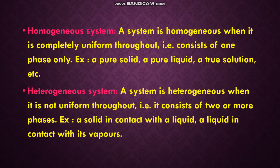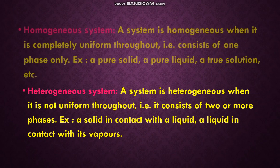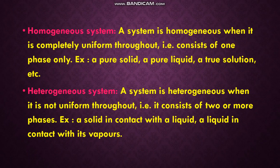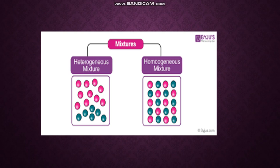Next is homogeneous and heterogeneous systems. A homogeneous system is completely uniform throughout — it consists of one phase. Examples: pure solid, pure liquid, and true solution. A heterogeneous system is not uniform throughout and consists of two or more phases. Examples: a solid in contact with a liquid, or a liquid in contact with its vapors. Homogeneous means completely uniform with one phase; heterogeneous means not uniform with two or more phases.